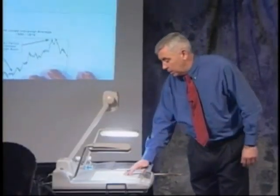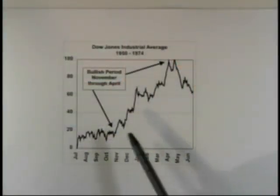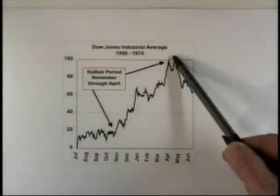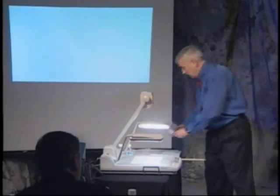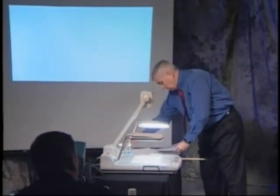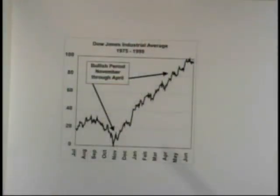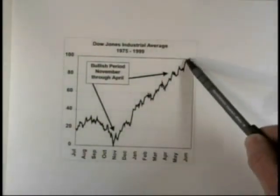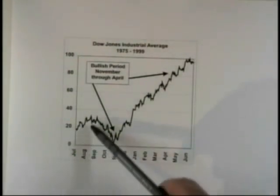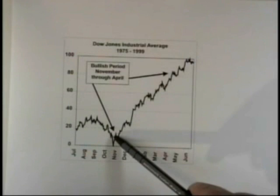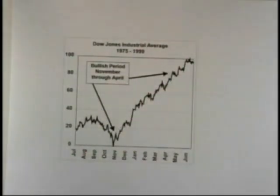Here's a 25-year chart of the Dow from 1950 to 1974. You can see the bullish period starts around October and ends around April or May — a very strong trend over that 25-year period. Here's another 25-year chart from 1975 through 1999, and again, the end of October to the end of April accounted for almost all of the gain in the Dow. During roughly June through October, the index actually lost ground, pointing out that strong trend from October through the end of April.